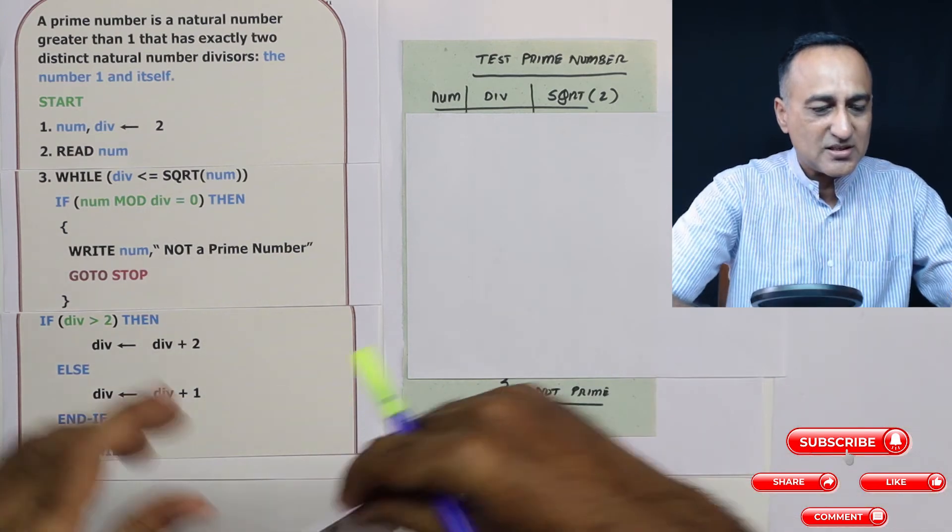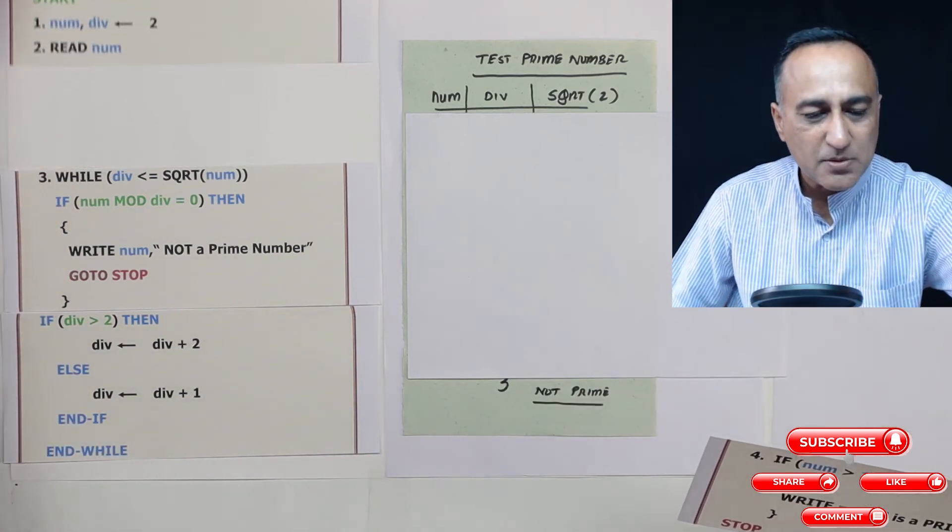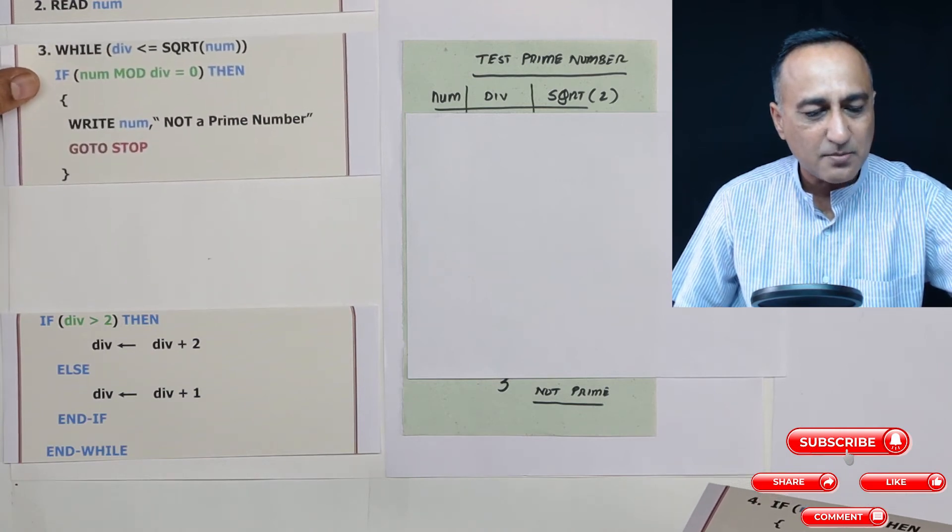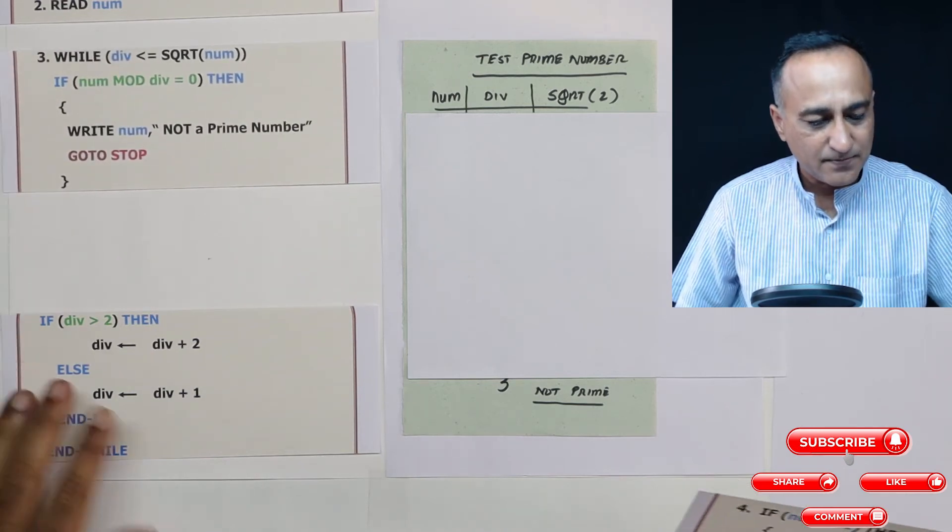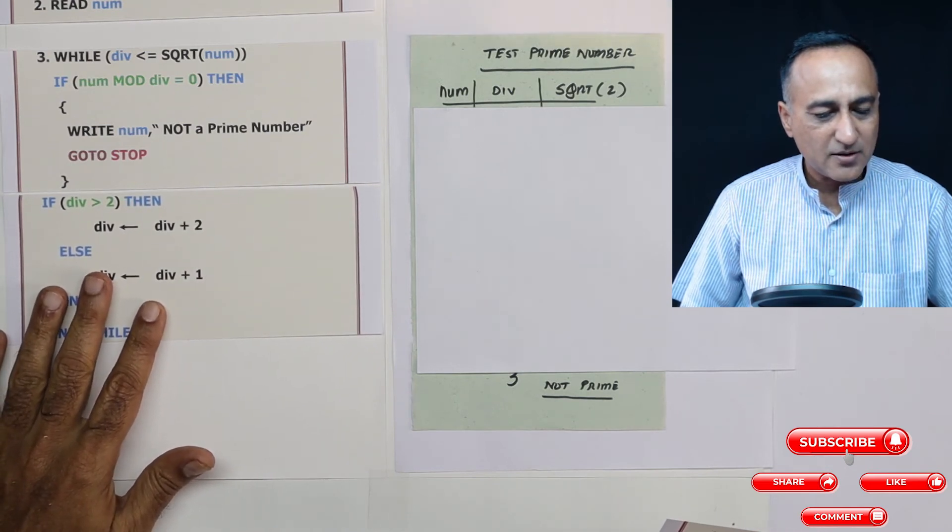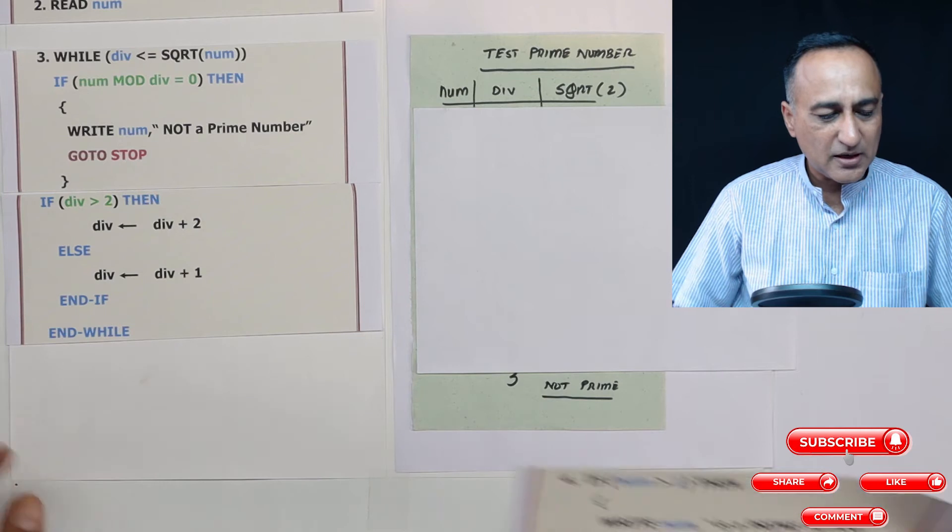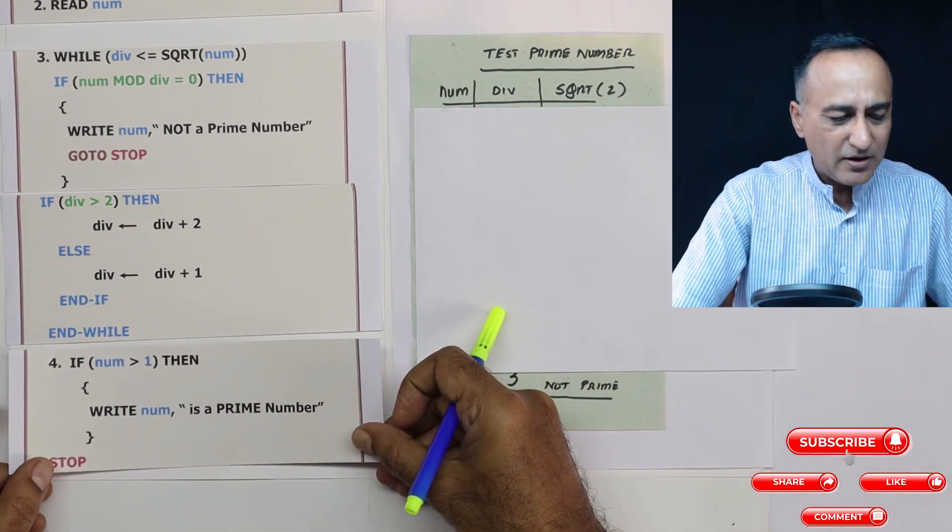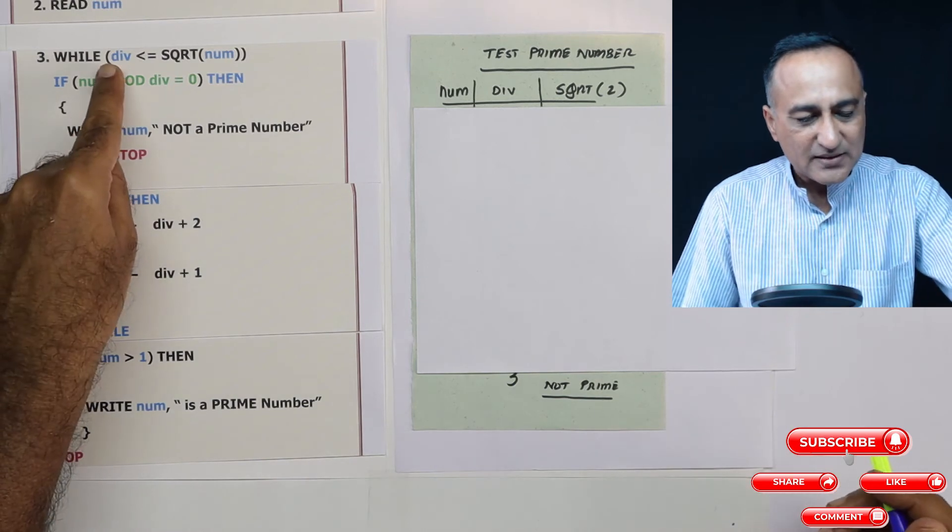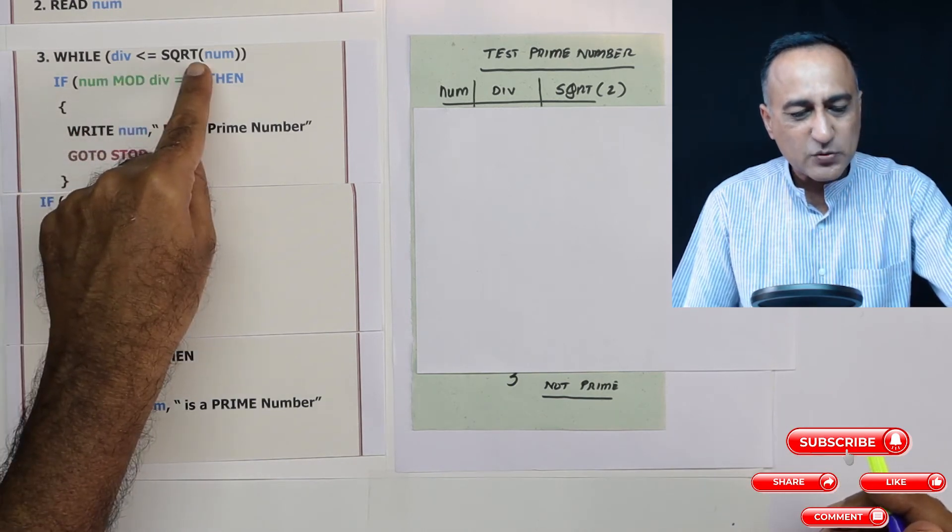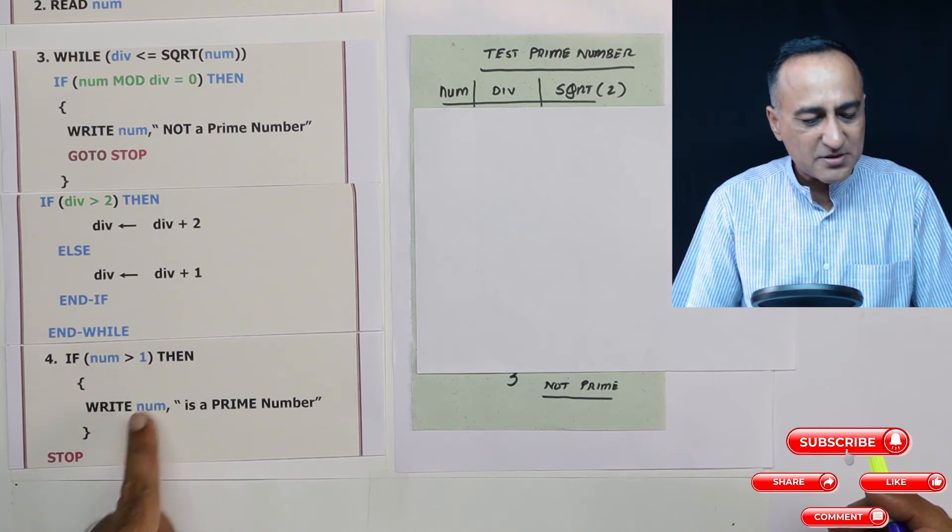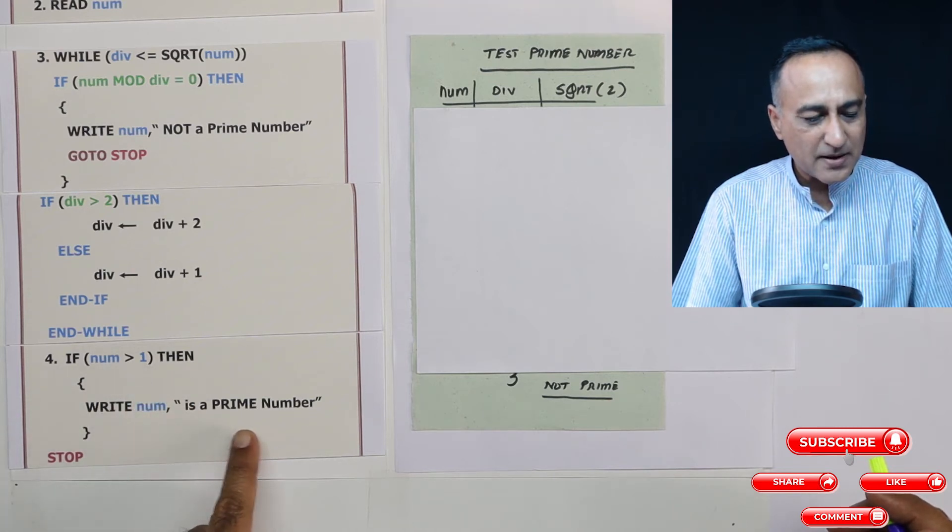This particular process is going to continue. I am going to put this particular part here. Then once I put this particular part, I will come to step number 4. If the divisor has become greater than the square root of the number and if the input number is greater than 1, I am straight away going to say number is a prime number.